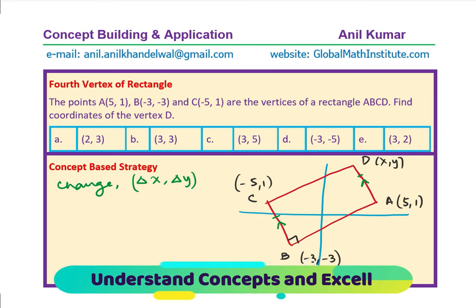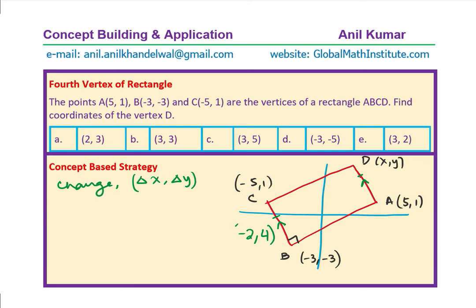If you look from B to C, the change is -3 goes to -5. So, in this case, the change is -2. As far as the y values are concerned, it goes from -3 to 1. That means, 3 + 1, which is 4. So, the change in value is -2, 4 when you go from B to C. So, this change is (-2, 4). And, we should have the same change from A to D.